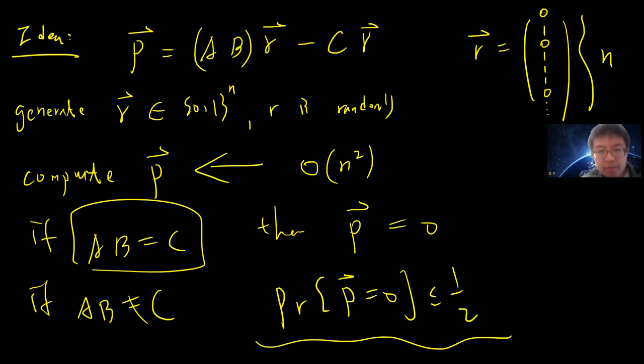So once you can prove this, then you can just amplify this error. Just run this algorithm for many times. With high probability, then you can find that C is not the same as AB if they are different. Up to this point is trivial, because if AB is equal to C, then obviously P must be 0. So let me just prove the rest.